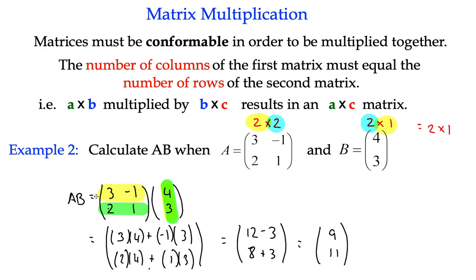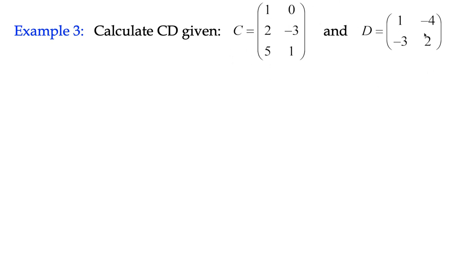So let's have a look at what happens when there's a few more to have to do because it will make a bit more sense as you see the pattern emerge. Calculate the product C times D given these two matrices C and D. So let's just check they're conformable. First of all, matrix C has three rows and two columns. And matrix D is a square matrix, which is 2 by 2.